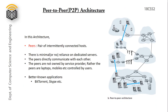In peer-to-peer architecture, pairs of intermittently connected hosts are called peers. Unlike client-server architecture, there is minimal or no reliance on dedicated servers. Peers are directly connected to each other and can communicate with each other. Peers are not owned by service providers; rather, peers are laptops and mobiles controlled by users. Some well-known P2P applications are BitTorrent, Skype, etc.